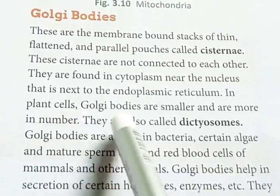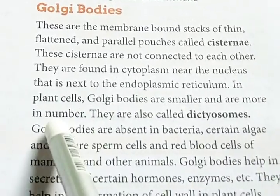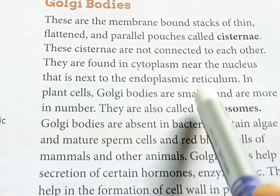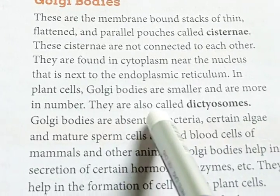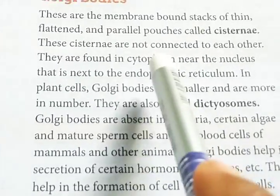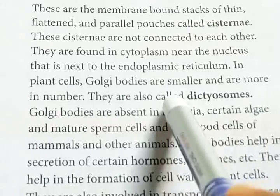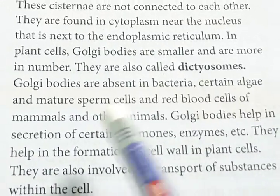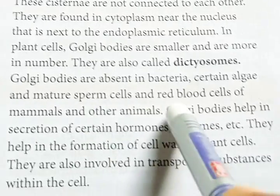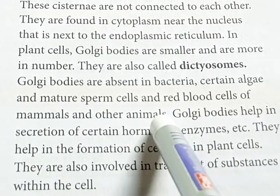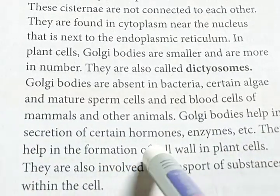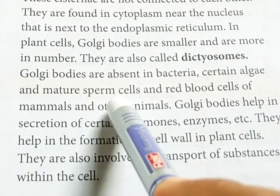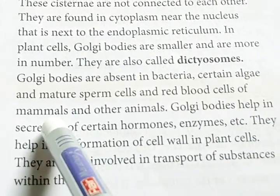In plant cells, Golgi bodies are smaller and are more in number. They are also called dictyosome. Golgi bodies are absent in bacteria, certain algae, mature sperm cells, and red blood cells of mammals and other animals. Please underline this one.